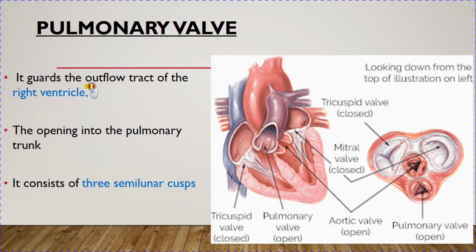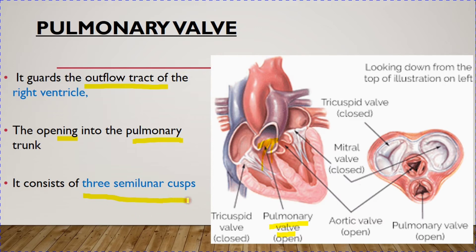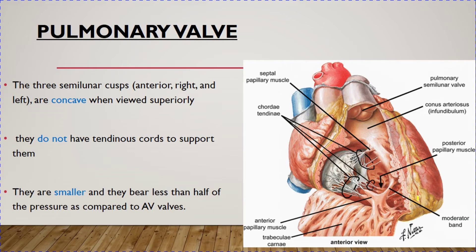The pulmonary valve guards the opening into the pulmonary trunk. In this figure, you can see the right ventricle and its outflow tract entering into the pulmonary trunk, with the pulmonary valve at this location. When the ventricle contracts, the pulmonary valve opens and blood is pushed into the pulmonary trunk. The pulmonary valve is made up of three semilunar cusps.